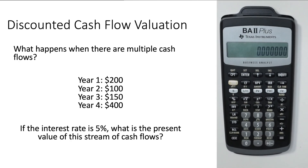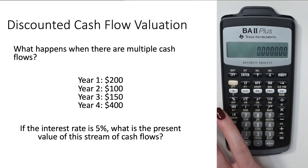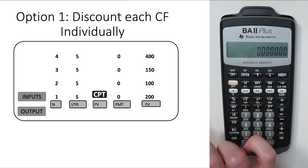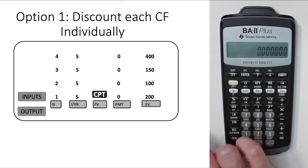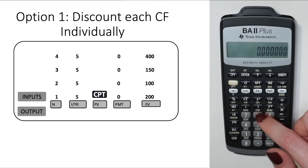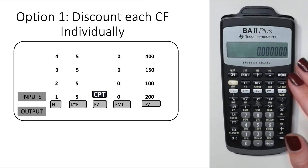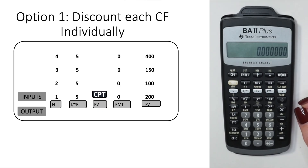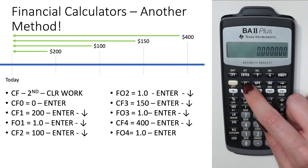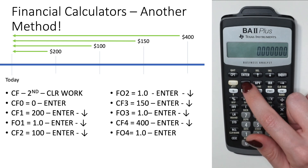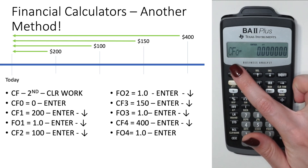For uneven cash flows, this is probably the trickiest thing to solve on financial or graphing calculators. One option is to discount each cash flow individually and add them together. The other option is to use the NPV formula. To get there, click the Cash Flow button next to the 2nd button — it will show cash flow zero, which is the initial cash flow.